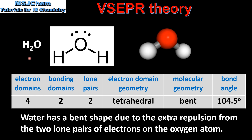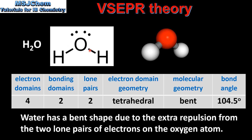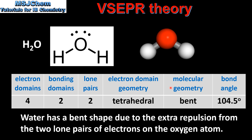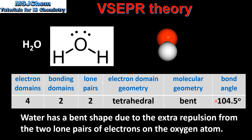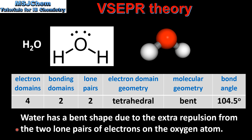Next we look at H2O. Here we have the Lewis structure for H2O. It has 4 electron domains around the oxygen atom — 2 bonding domains and 2 lone pairs of electrons. The electron domain geometry is tetrahedral, the molecular geometry is bent, and the bond angle is 104.5 degrees. Water has a bent shape due to the extra repulsion from the 2 lone pairs of electrons on the oxygen atom.